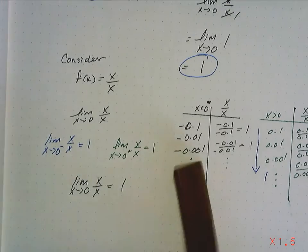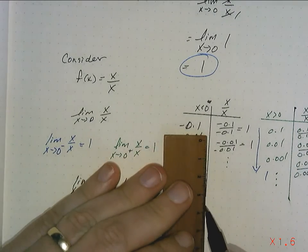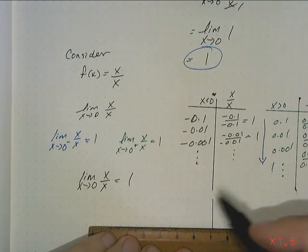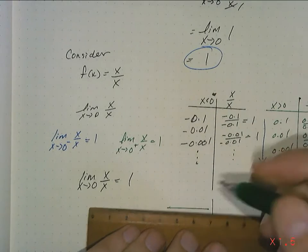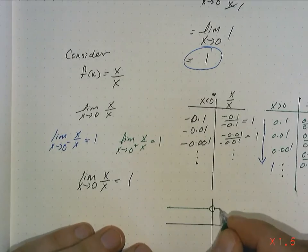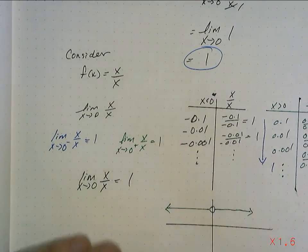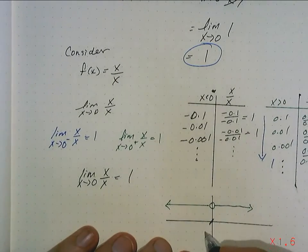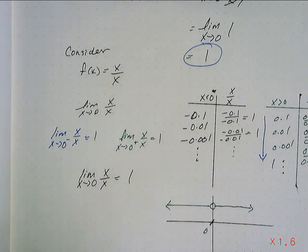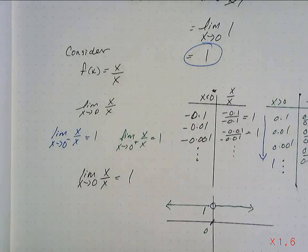And what this would look like as a graph, by the way, it would look like this. So the limit, as x approaches 0, either from the left or from the right, is at the y value of 1.